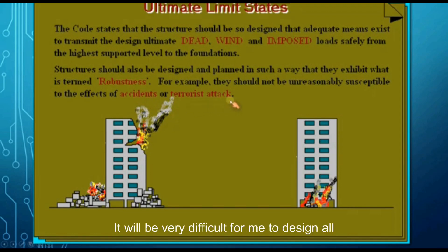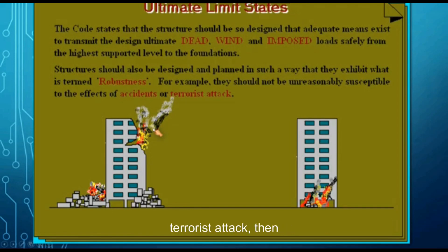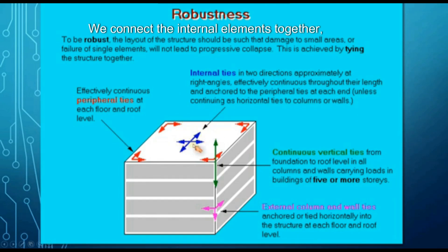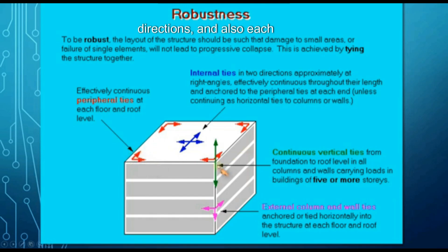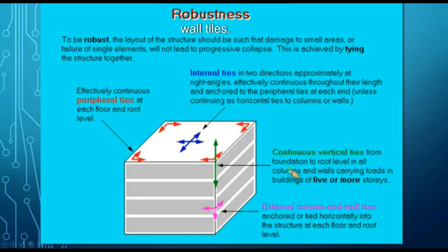Robustness tells you that you cannot design every building in the world to withstand extreme accidental events — it would be very difficult. However, for certain important buildings that may be exposed to accidents or terrorist attacks, we apply the theory of robustness. This means connecting the building elements together — internal elements in all directions, perimeter elements around the columns in two directions, and continuous vertical ties connecting each element above and below, plus synchronous connections on all sides.